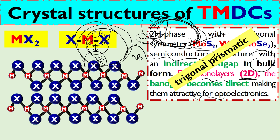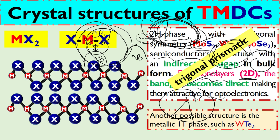The structure of this 2H-phase is trigonal prismatic—just like a prism. Another interesting structure of transition metal dichalcogenides is 1T-phase.